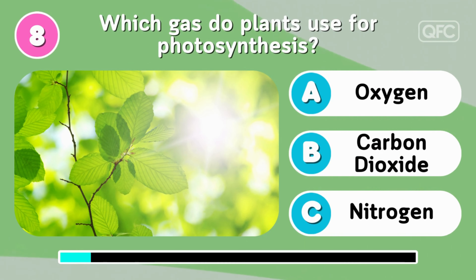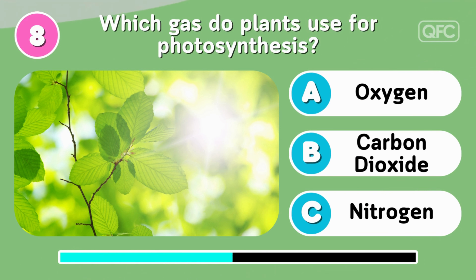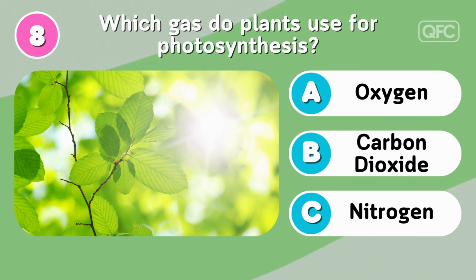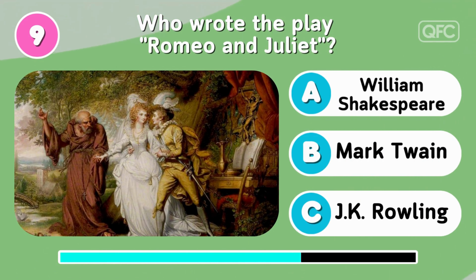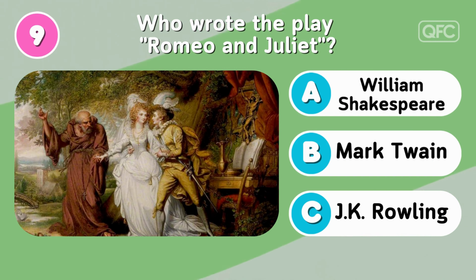Which gas do plants use for photosynthesis? Carbon Dioxide! Who wrote the play Romeo and Juliet? William Shakespeare!